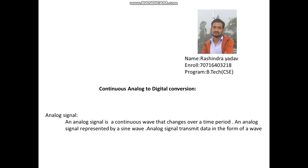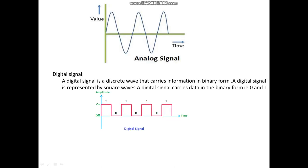The topic assigned to me is analog to digital conversion. An analog signal is a continuous wave that changes over time — its value changes as time changes. Analog signal represents a sine wave and its data is transmitted in the form of a wave. This diagram represents the analog signal: the x-axis shows time and the y-axis shows its value. When time changes, its value also changes.